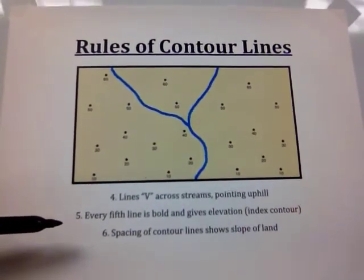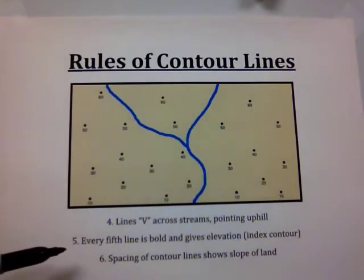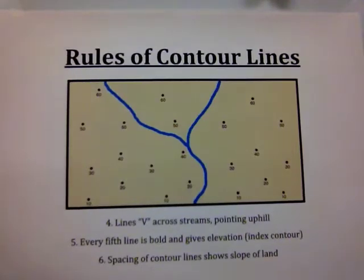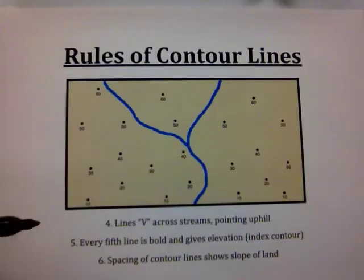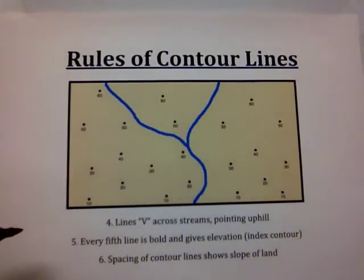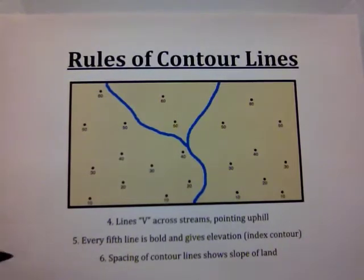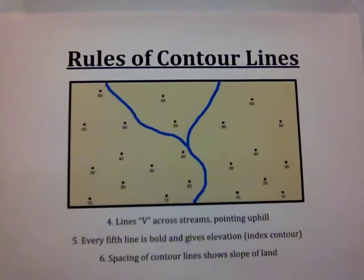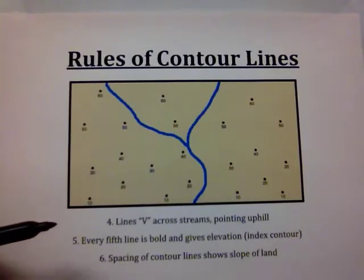Every fifth contour line is bold — it's thicker on the map than the others, and it has the elevation written on the line. In the previous figure we just drew lines without writing the numbers; the bolded index contour lines will have the number written on the line itself. The spacing of contour lines also shows slope. Where the lines are closer together, you have more vertical change and a steeper slope; where the lines are further apart, you have a less steep slope.